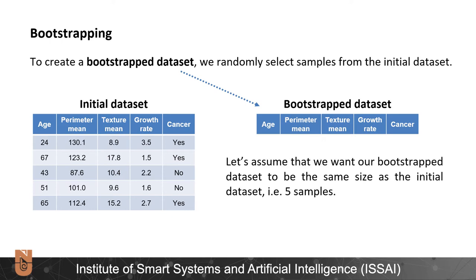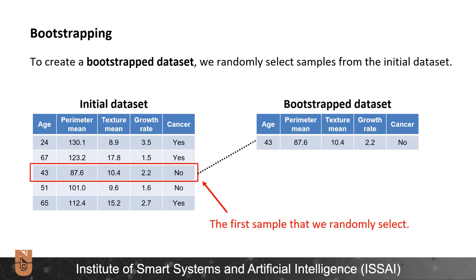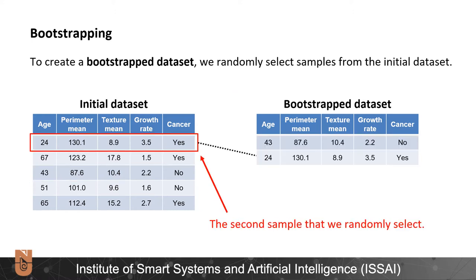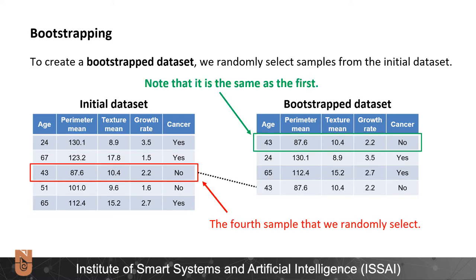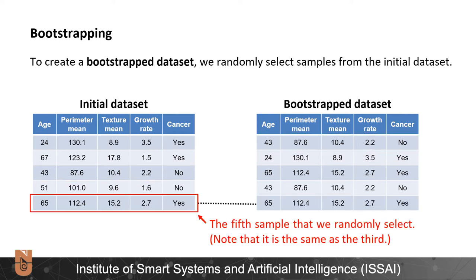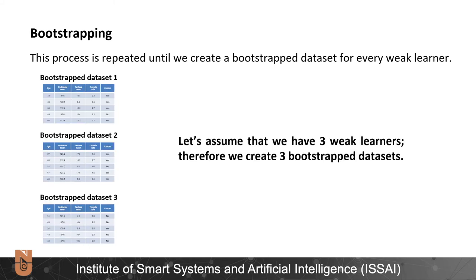Let's assume that we want our bootstrapped dataset to be the same size as the initial dataset. Note that we might pick the same sample more than once. So here is our first sample that we randomly select, second sample, third sample, fourth sample – note that it is the same as the first sample – and finally our fifth sample, which is the same as our third sample. This process is repeated until we create a bootstrap dataset for every weak learner. Let's assume that we have three weak learners, and therefore we create three bootstrapped datasets.